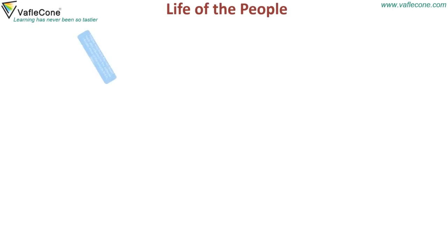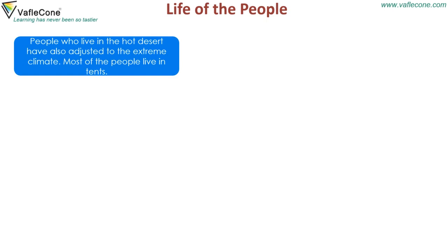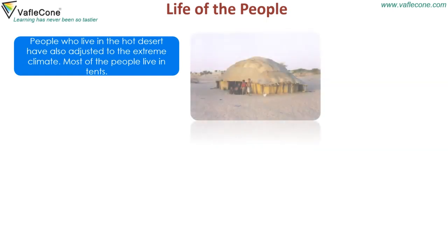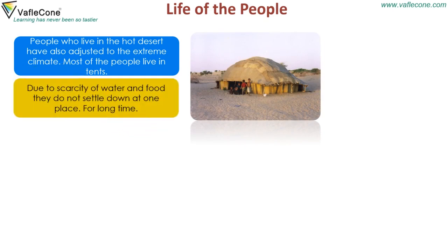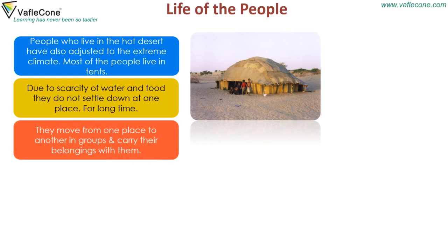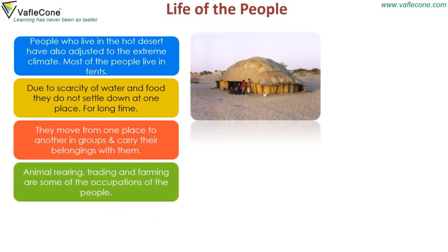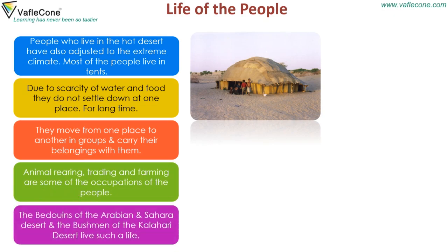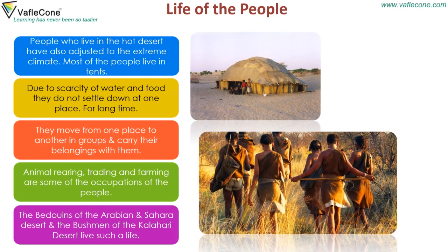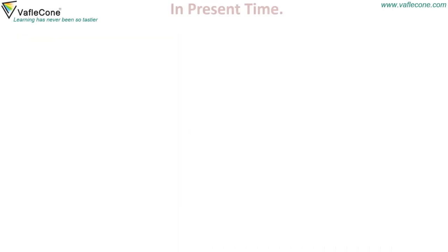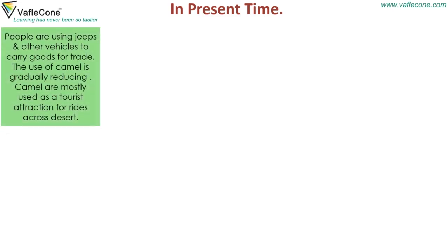Life of the people: People who live in the hot desert have also adjusted to the extreme climate. Most of the people live in tents. Due to scarcity of water and food they do not settle down at one place for a long time. They move from one place to another in groups and carry their belongings with them. Animal rearing, trading and farming are some of the occupations of the people. The Bedouins of the Arabian and Sahara Desert and the Bushmen of the Kalahari Desert live such a life. In present times, people are using jeeps and other vehicles to carry goods for trade, and the use of camel is gradually reducing. Camels are mostly used as a tourist attraction for rides across the desert.